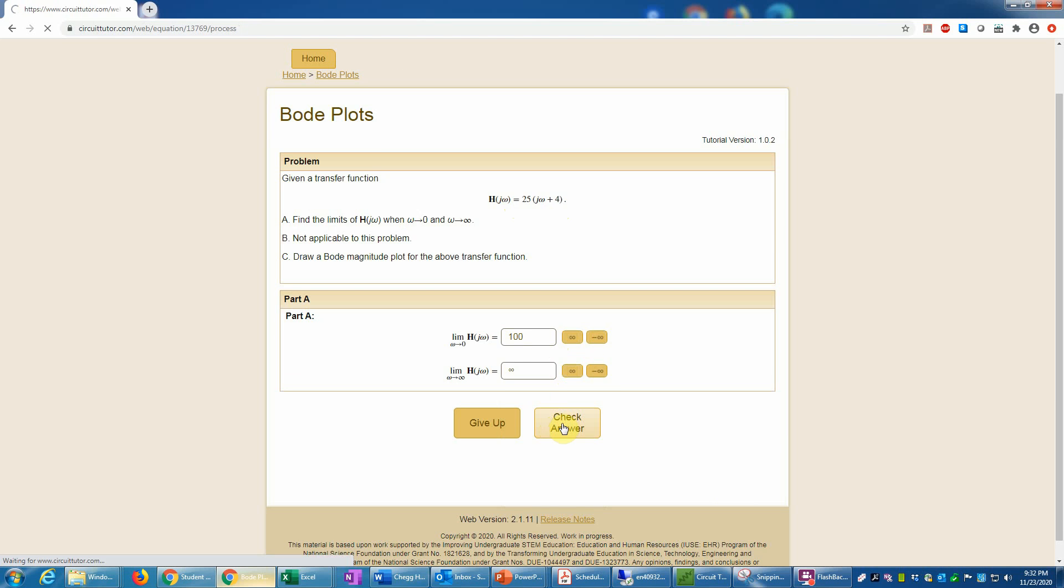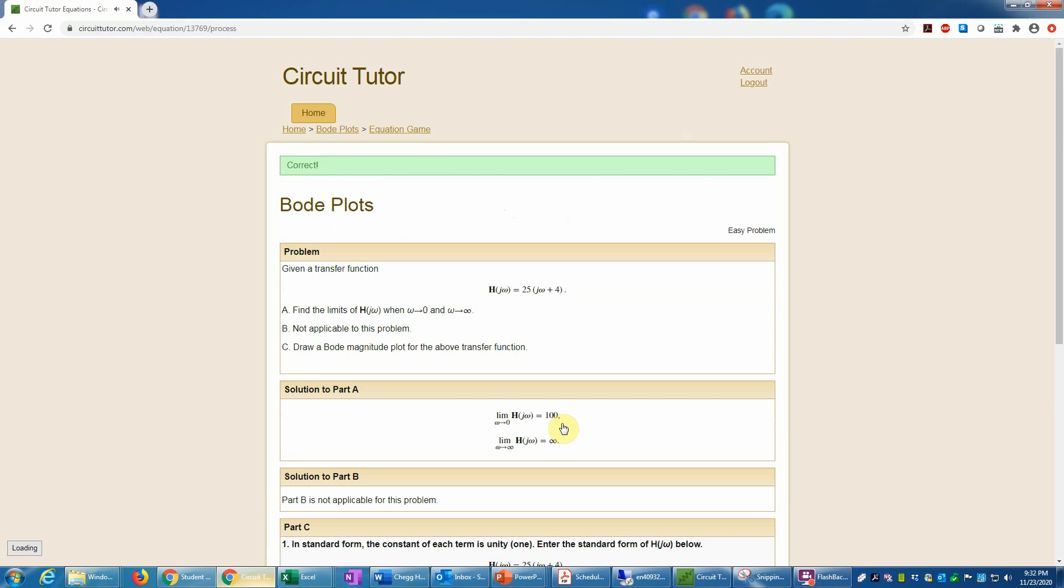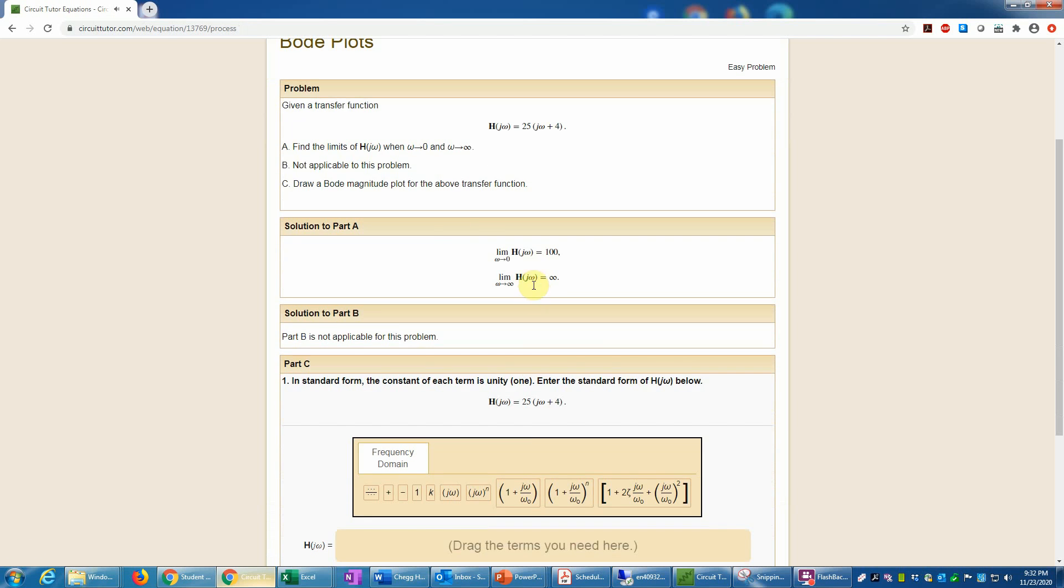Now we'll check that, and that is correct. I'll print the answers on the screen. Part B, which has to do with filter type and the order of the filter, is not applicable here because this is not a conventional type of filter. But if you were answering that question, you would look at these limits and use that to deduce the type of filter. For example, if this limit were 100 and this limit were 0, that would be a low-pass filter, or the reverse would be a high-pass filter.